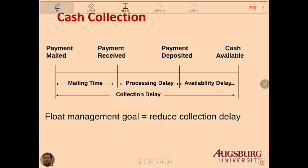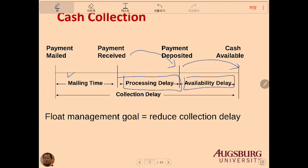This is the cash collection cycle. Payment is mailed, then received — that's mailing time. Then payment is deposited — that's processing delay. After payment deposit, cash becomes available — that's availability delay, also called the collection delay. The float management goal is to reduce this collection delay.